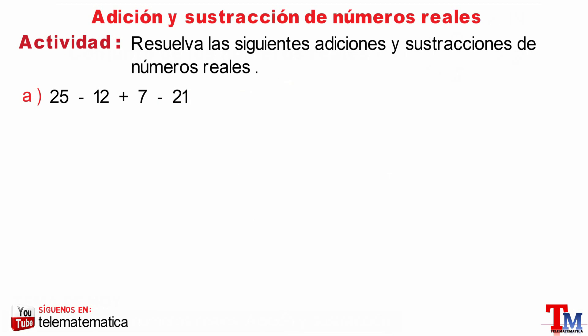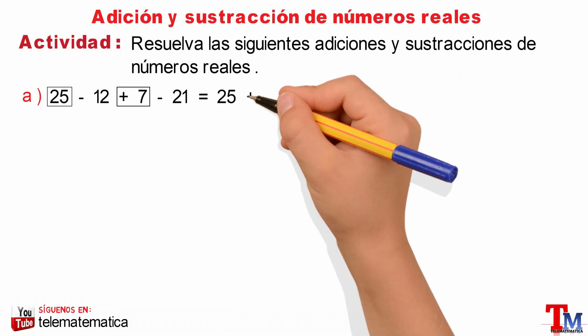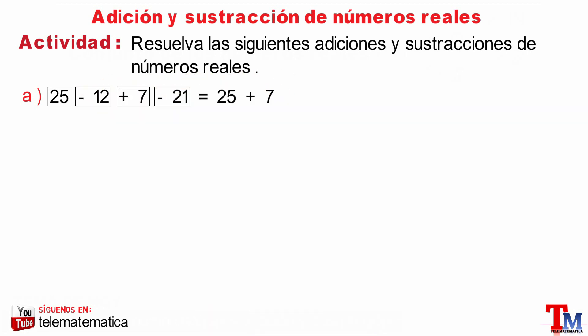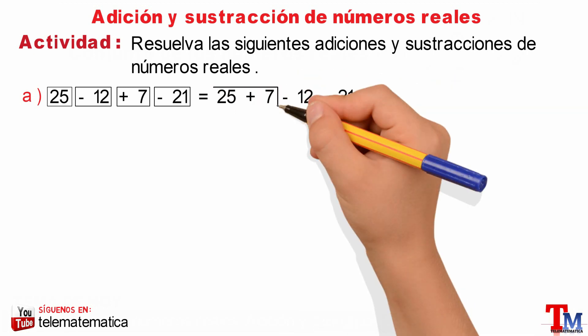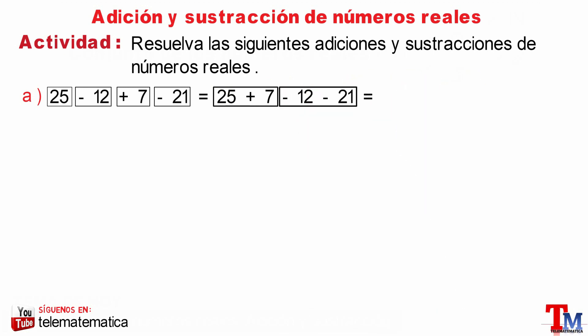To start, we are in the presence of the addition and subtraction of whole numbers, and specifically we have two natural numbers. This will be the same by grouping the numbers with positive signs, and grouping the numbers with negative signs. Reducing the grouped numbers, this would be equal to 32 minus 33, and as the final result, this will be equal to minus 1.